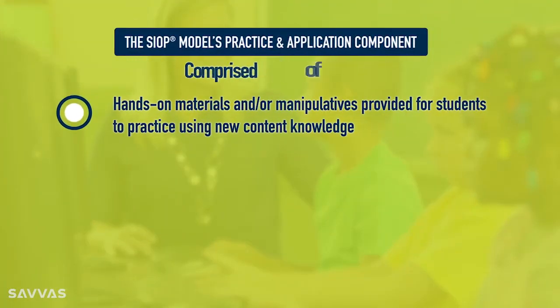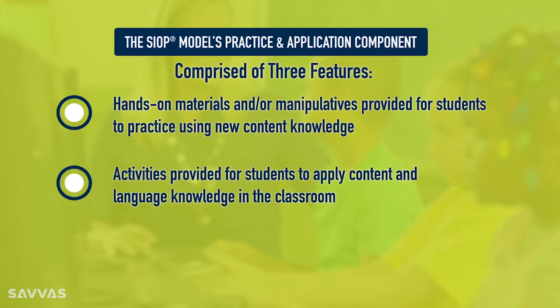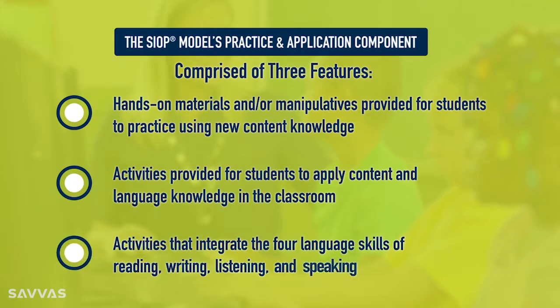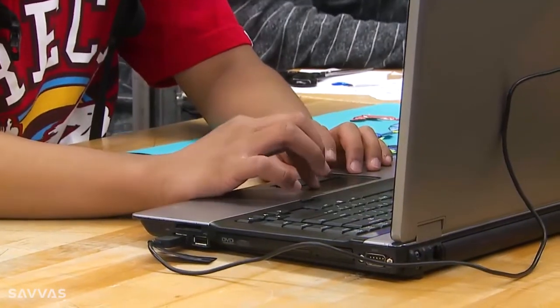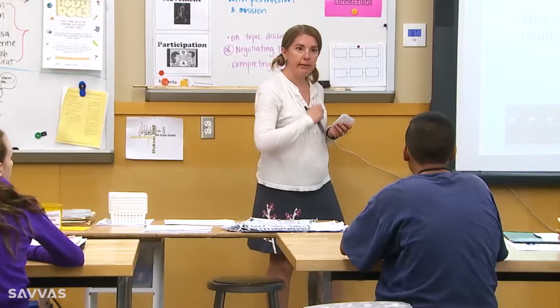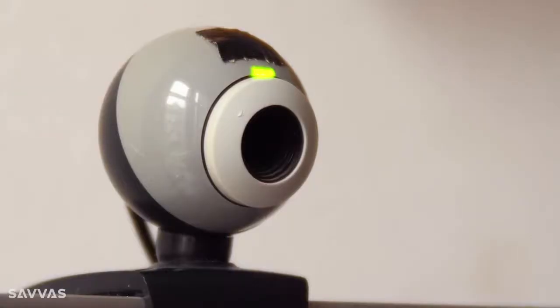The SIOP model's practice and application component is comprised of three features: hands-on materials and/or manipulatives provided for students to practice using new content knowledge; activities provided for students to apply content and language knowledge in the classroom; and activities that integrate the four language skills of reading, writing, listening, and speaking.